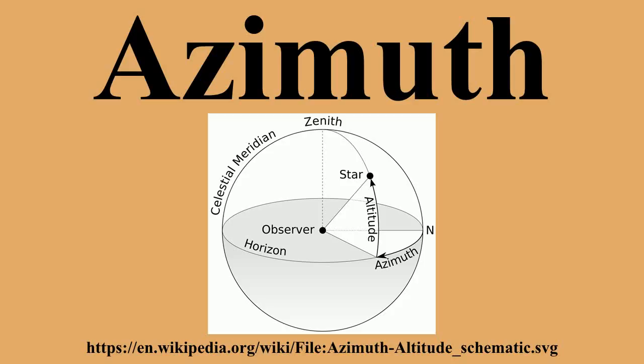An azimuth is an angular measurement in a spherical coordinate system. The vector from an observer to a point of interest is projected perpendicularly onto a reference plane. The angle between the projected vector and a reference vector on the reference plane is called the azimuth.